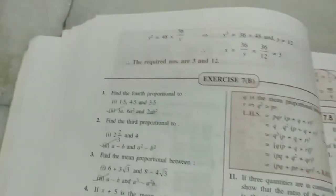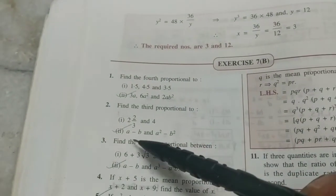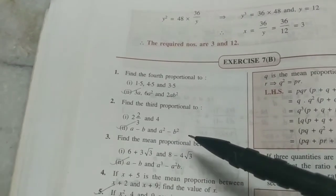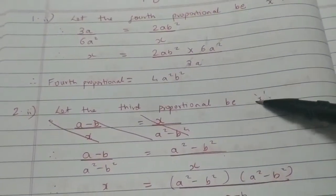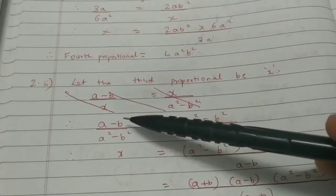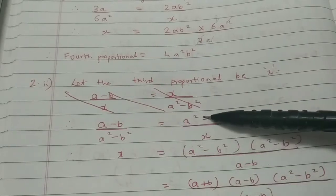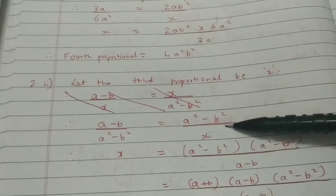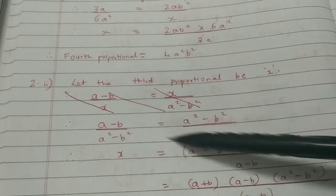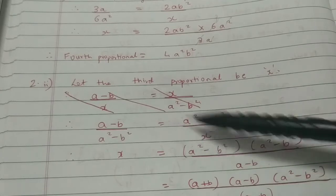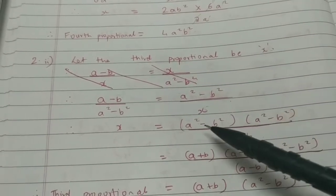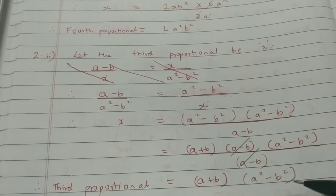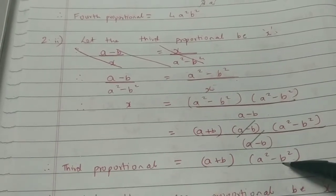Next question, 2.2: Find the third proportional. Only two terms are given and the third proportional is asked — there is no fourth proportional in this sum. If we assume the third proportional to be X, the ratios will be first term upon second term is equal to second term upon the third term. So mean squared will be equal to the product of the extremes. If we cross multiply, notice that A squared minus B squared can be split into (A+B)(A−B). The reason we should do that is so that we can simplify further. And this is the final answer, which is the third proportional.